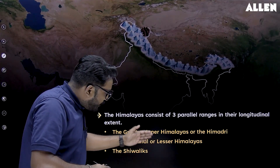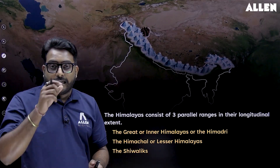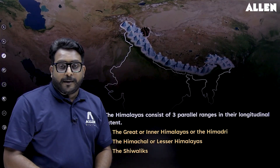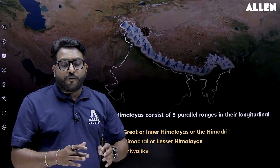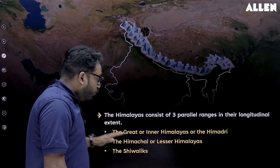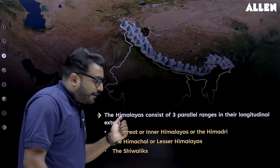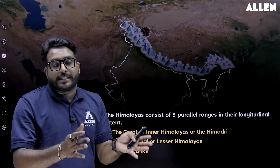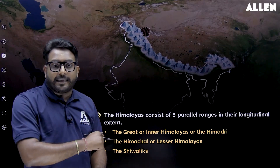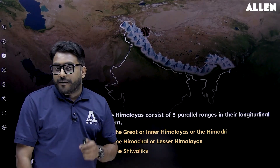South of the Inner Himalayas is the Himachal, or the Lesser Himalayas, whose height varies from 3,700 meters to 4,500 meters. They are the most rugged ranges. South of the Lesser Himalayas we have the outermost range known as the Shivaliks, whose height varies from 900 meters to 1,100 meters.